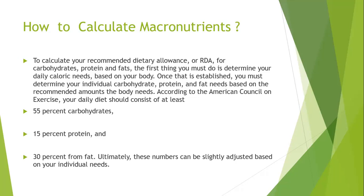How to calculate macronutrients: protein, carbohydrate, and fat are the important macronutrients, but water — the often-forgotten nutrient — should also be included as many enzymes require water. To calculate recommended dietary allowances for Indians, carbohydrate, protein, and fat are distinguished at approximately 55% carbohydrate, 15% protein, and 30% fat — though a 60-20-20 distribution can also be used.